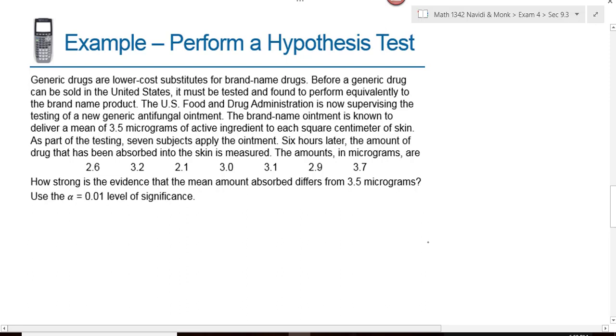Generic drugs are lower cost substitutes for brand name drugs. Before a generic drug can be sold in the United States, it must be tested and found to perform equivalent to the brand name product. The US Food and Drug Administration is now supervising the testing of a new generic antifungal ointment. The brand name ointment is known to deliver a mean of 3.5 micrograms of active ingredient to each square centimeter of skin. So X bar for the brand name is 3.5. As part of the testing, seven subjects apply the ointment. Six hours later, the amount of drug that has been absorbed into the skin is measured. How strong is the evidence that the mean amount absorbed differs from 3.5 micrograms?